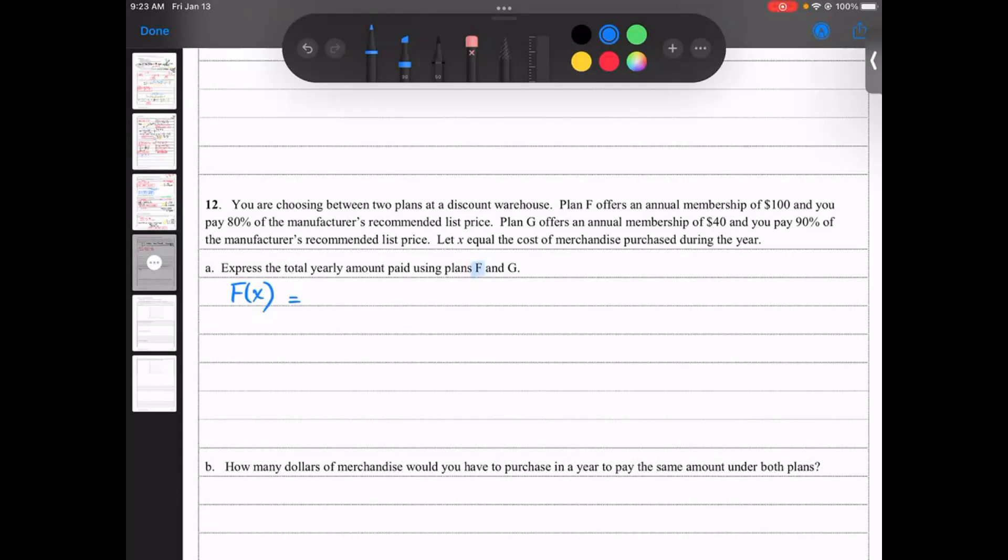So the first one, F of X, is the first company offer plan F. You pay $100 fixed for membership, and then 80% for the list price. So first one I can come up with is what? $100, which is your fixed price, right, fixed amount of money that you pay, and then 0.8X, does that make sense?